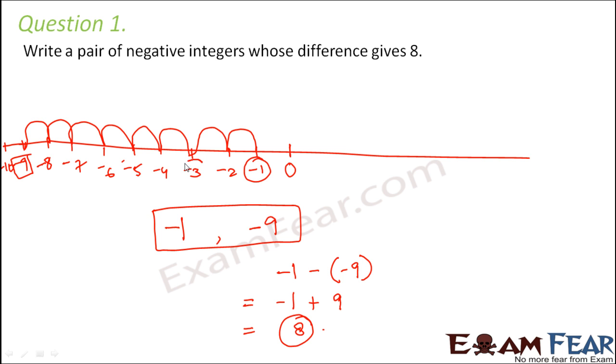If you want to choose minus 3, you could have chosen minus 3 as one integer. In that case, you make 8 jumps from minus 3 and where do you reach? You reach at minus 11.